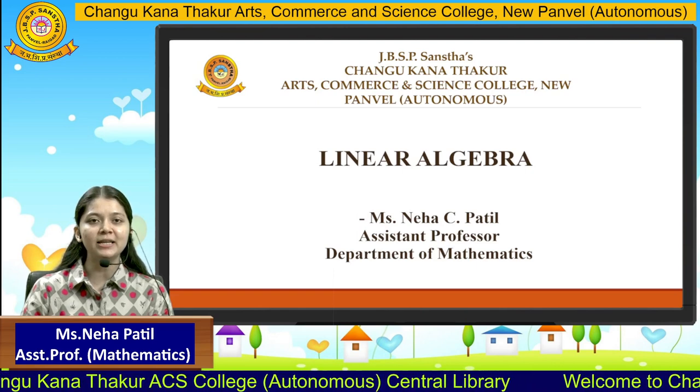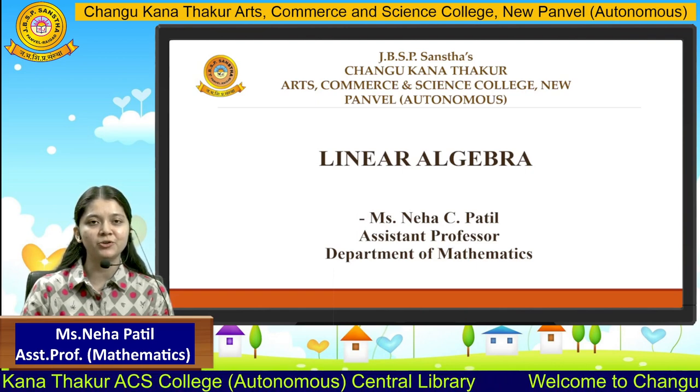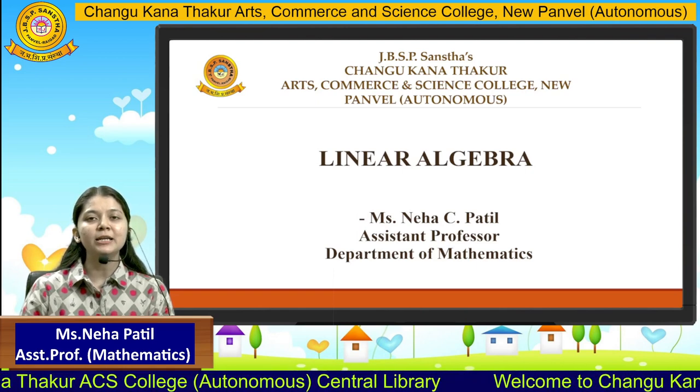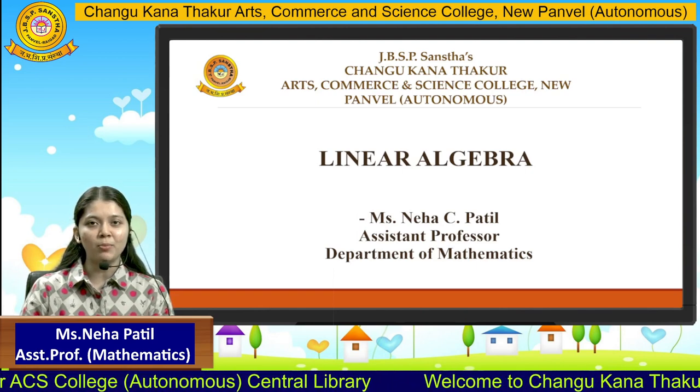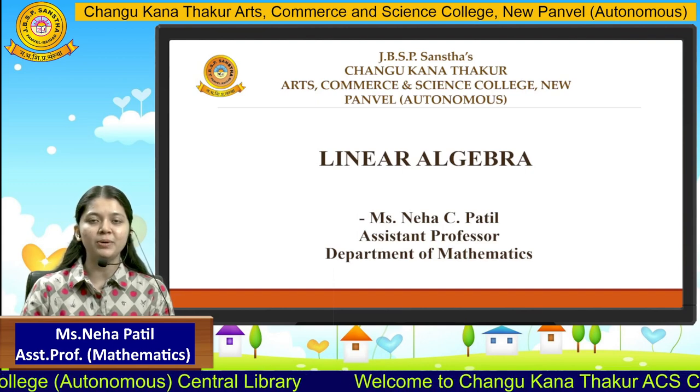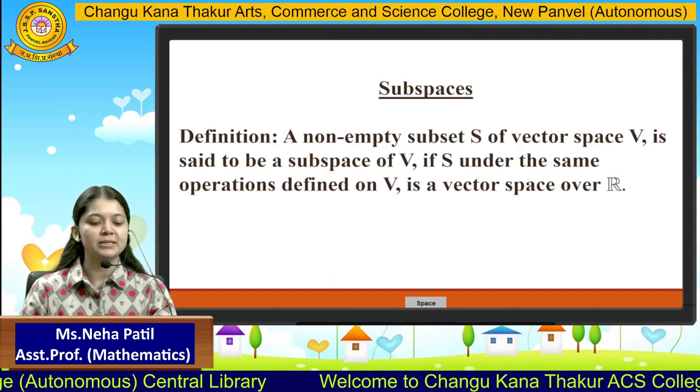In order to prove any set to be a vector space, it needs to satisfy all the 10 properties. Then only we can call any set to be a vector space.